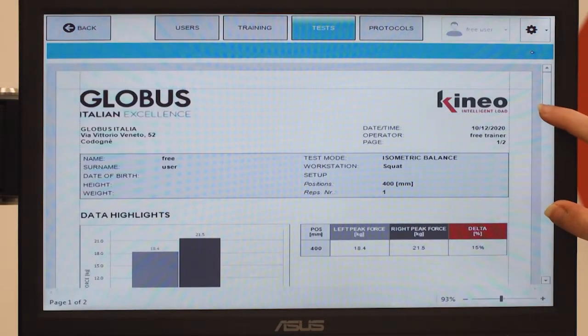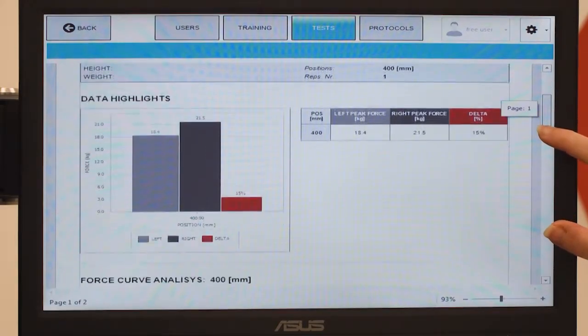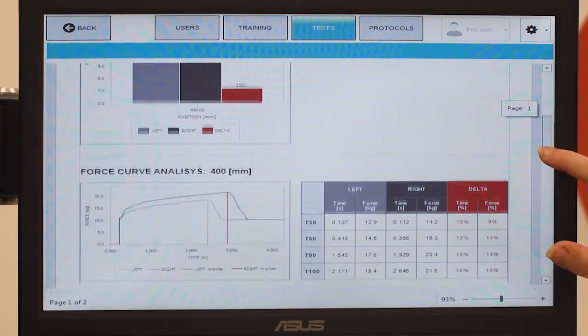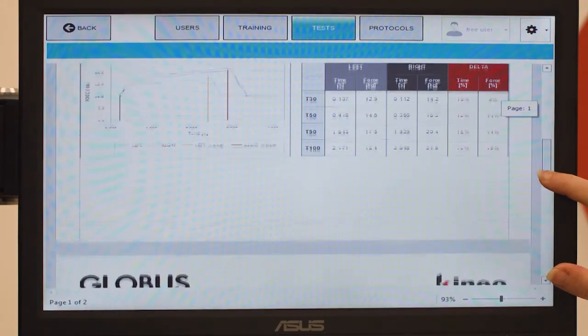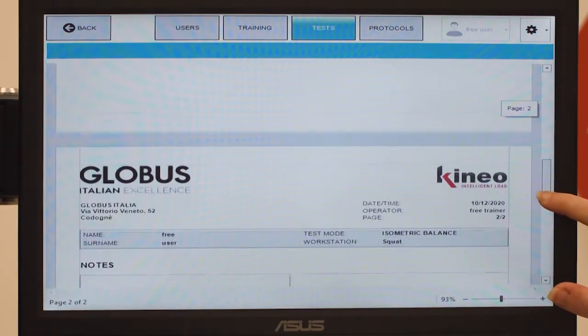The curves analysis allows you to graphically analyze the data collected in terms of strength and seconds at 30%, 50%, 90%, and 100% of the isometric max strength values respectively.